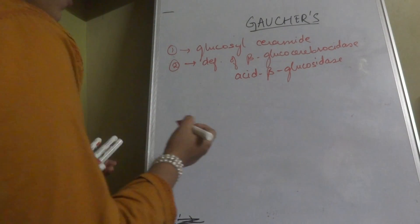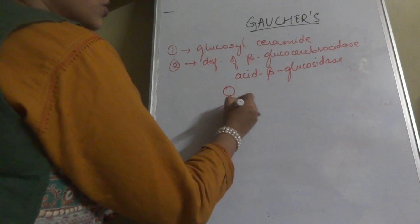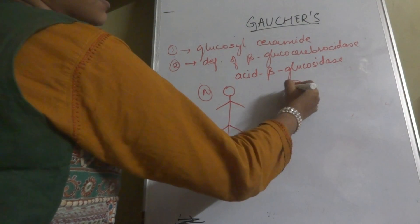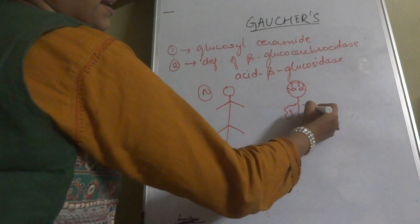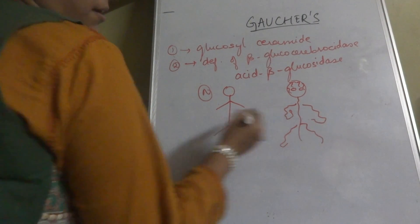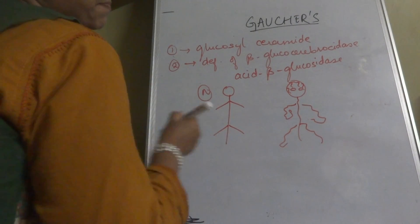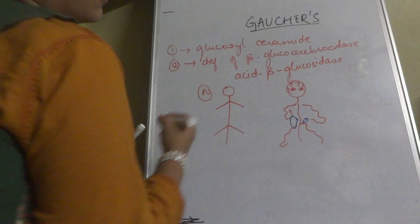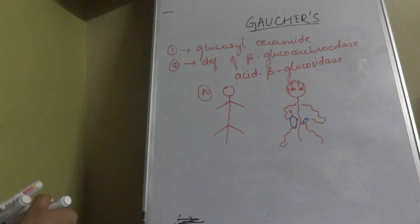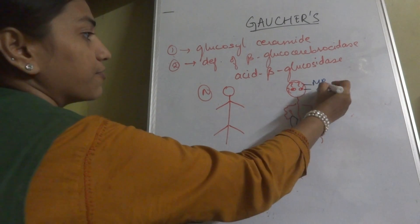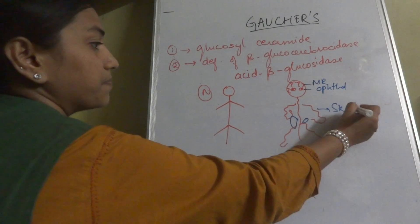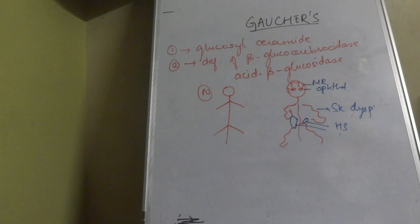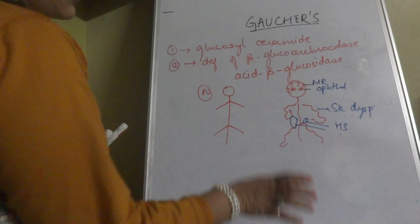Now comparing with a normal human being, Gaucher's disease produces skeletal dysplasia, hepatomegaly, splenomegaly, and defective eye movements. This indicates there is mental retardation, ophthalmic defects, skeletal dysplasia, and hepatosplenomegaly. However, not all types of Gaucher's disease present with all of these features.